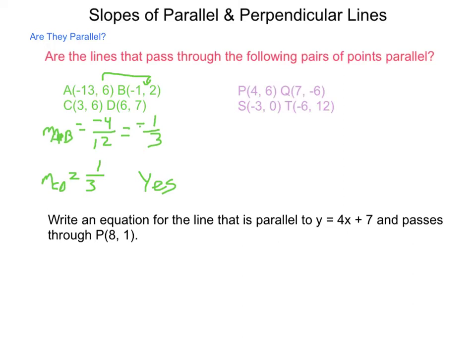Let's take a look at our next one, PQ and ST. For PQ, the slope of PQ, the rise from 6 to negative 6 is a negative 12. Our run from 4 to 7 is 3. So we get a slope of negative 4.